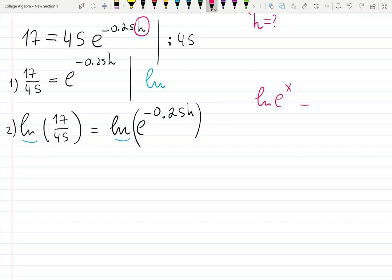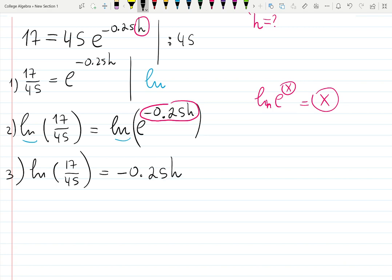Log, log, and I'll put parentheses. You know the rule: ln of e to the x, ln undoes e, so whatever's going to stay is only this input. What is my input in this case? My input is negative 0.25h. So I will have natural log of 17 over 45 on the left-hand side, and minus 0.25h on the right-hand side.